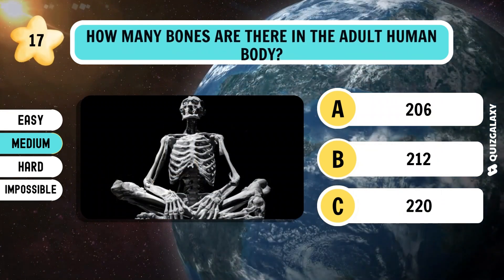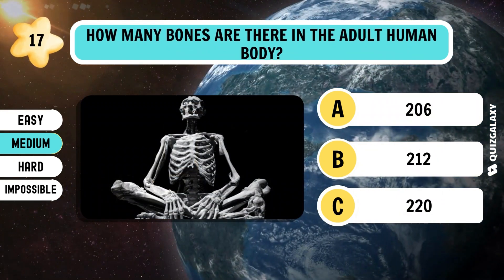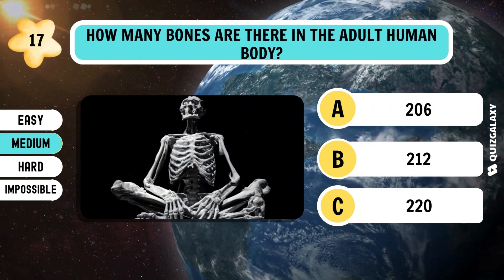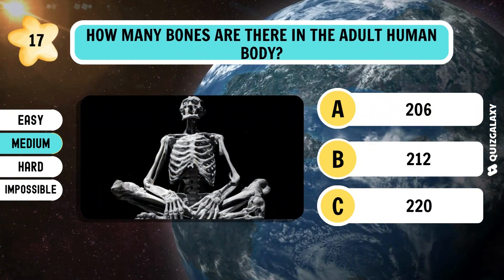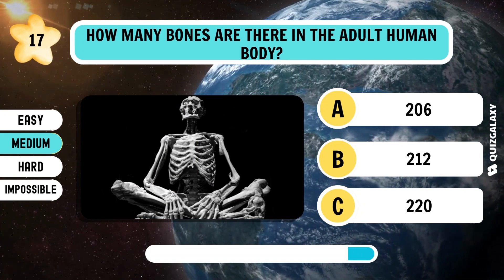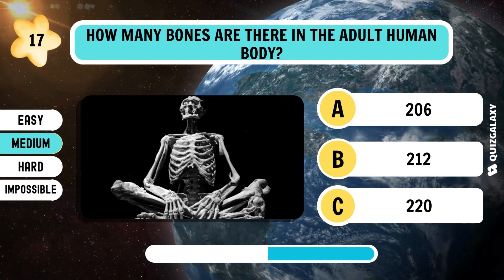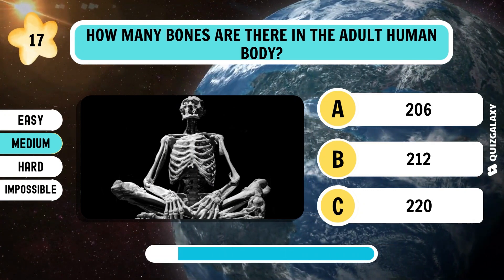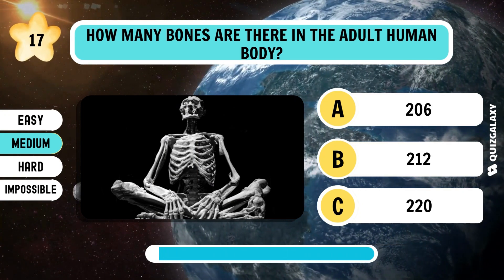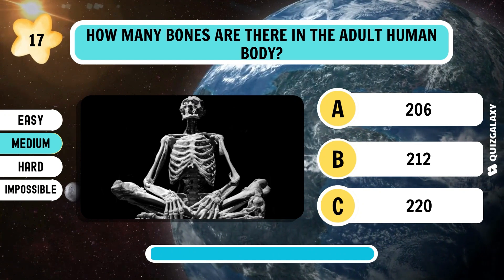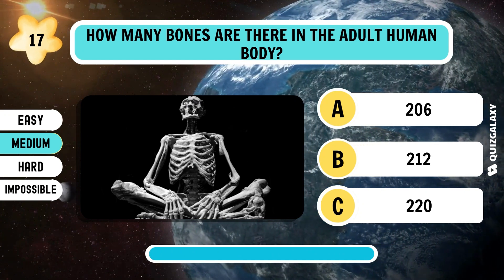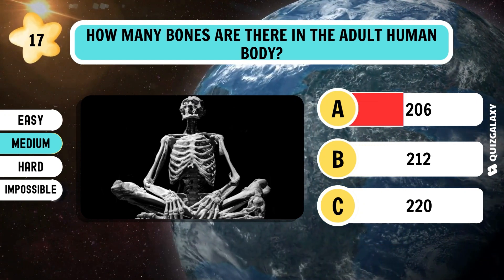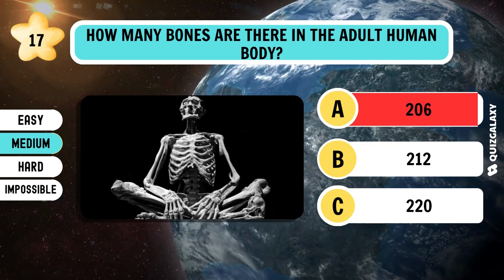How many bones are there in the adult human body? 206.